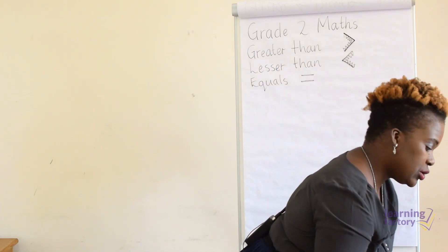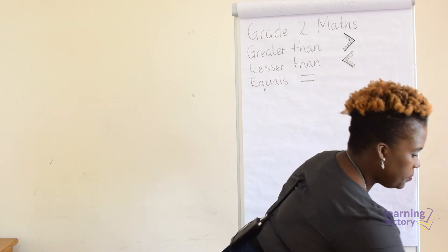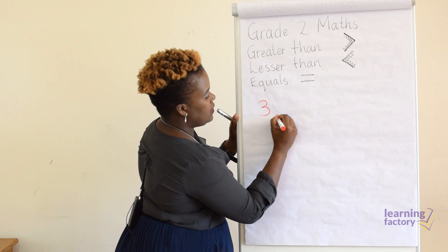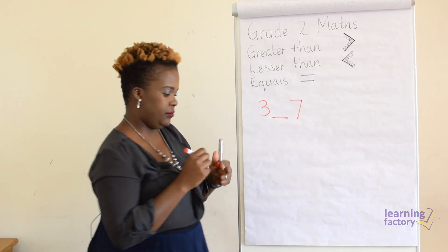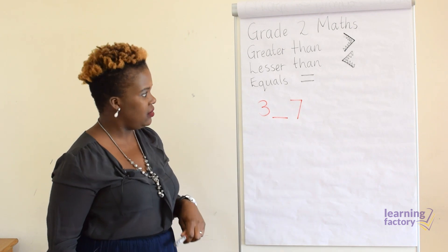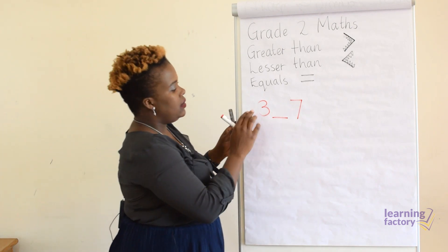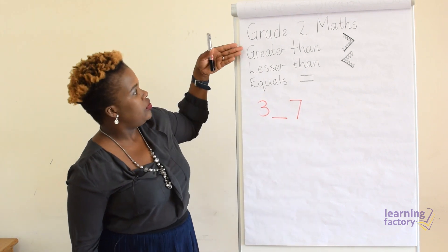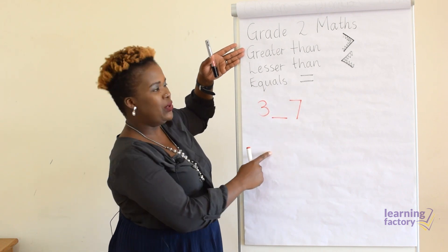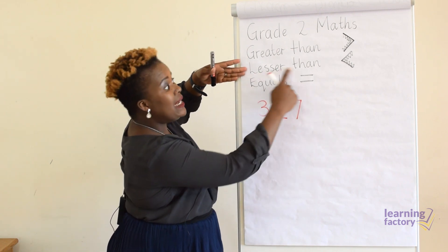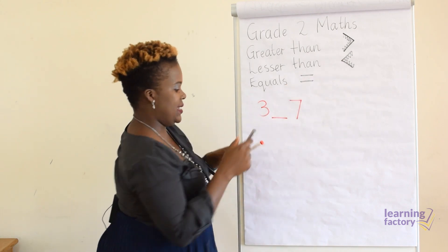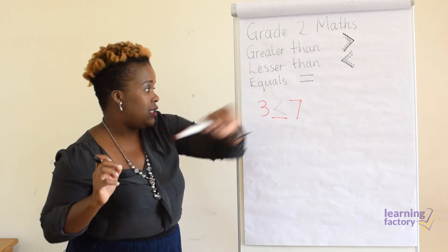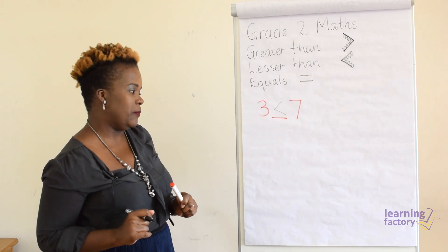Now let's go on to some actual numbers. Let's have three, leave a space in the middle, and seven. What sign do we put there? Let's read the sentence: three is dash than seven. Is three greater than seven? No. Is three lesser than seven? Yes — so let's put that sign.